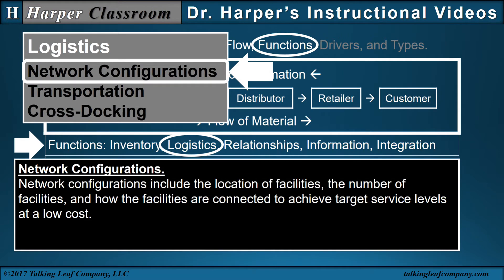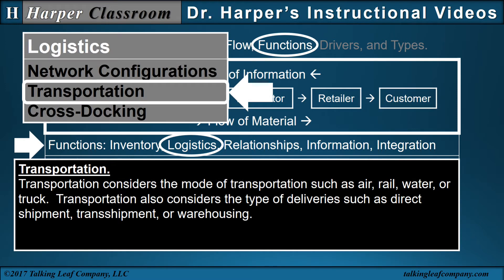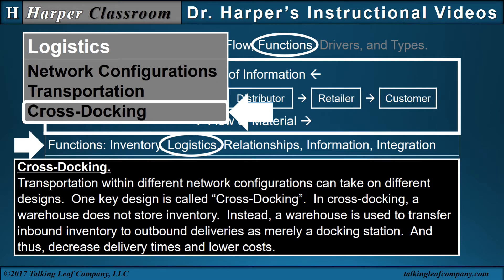Logistics. Network configurations include the location of facilities, the number of facilities, and how the facilities are connected to achieve target service levels at a low cost. Transportation considers the mode of transportation such as air, rail, water, or truck. Transportation also considers the type of delivery such as direct shipment, transshipment, or warehousing. Another key term in supply chain management is cross docking. In cross docking, a warehouse does not store inventory. Instead, a warehouse is used to transfer inbound inventory to outbound deliveries as merely a docking station, and thus decrease delivery times and lower costs.